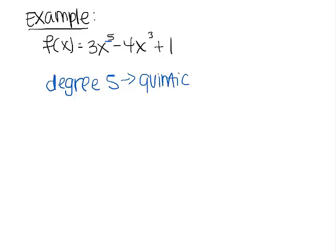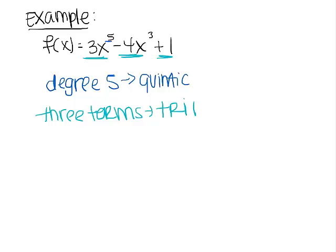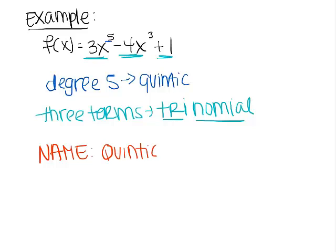This polynomial has degree 5 and there's a special name for that — it is called quintic. Now we look at how many terms we have here. I can see one, two, three distinct terms. None of these terms are like terms so I can't combine them, meaning this is in most simplified form. This polynomial has three terms and the special name for that is a trinomial — tri means three and nomial means terms. So the official name for this function f of x is a quintic trinomial.